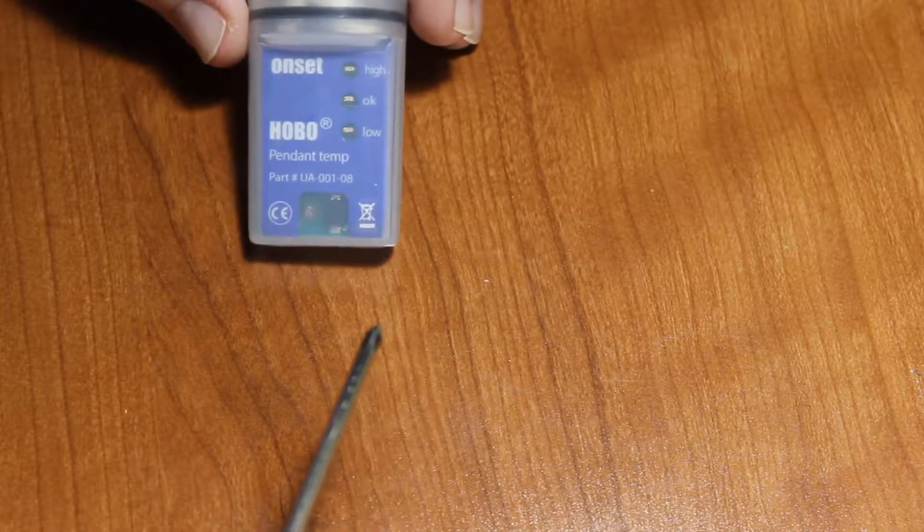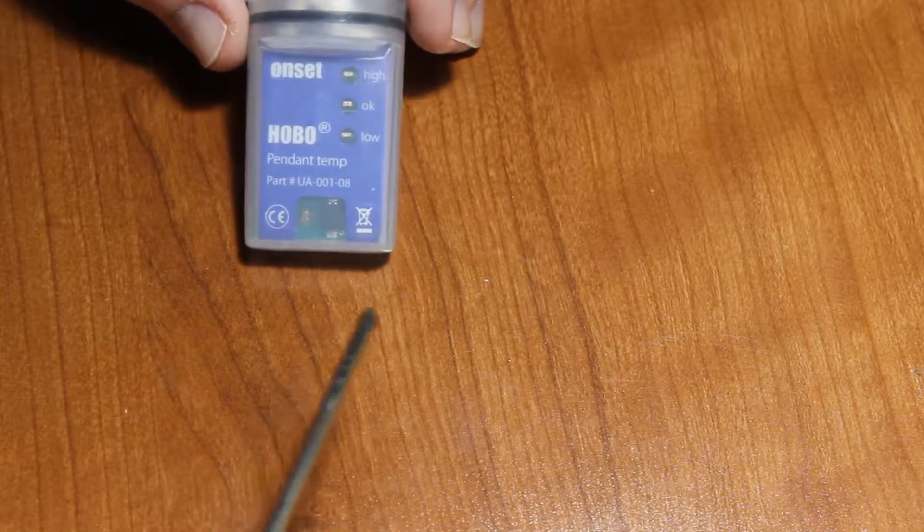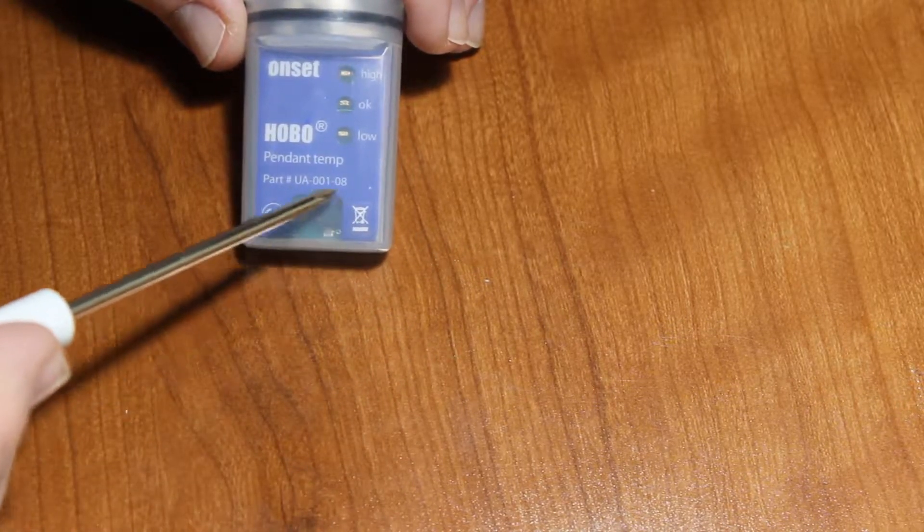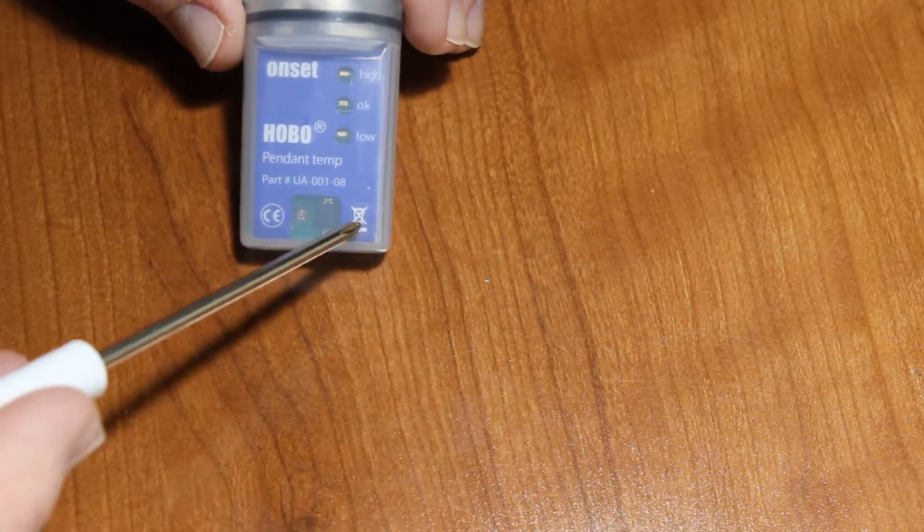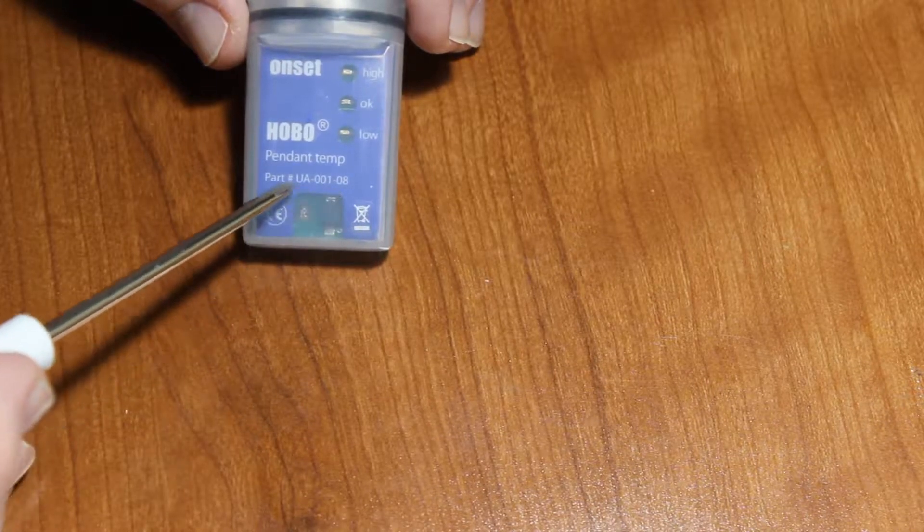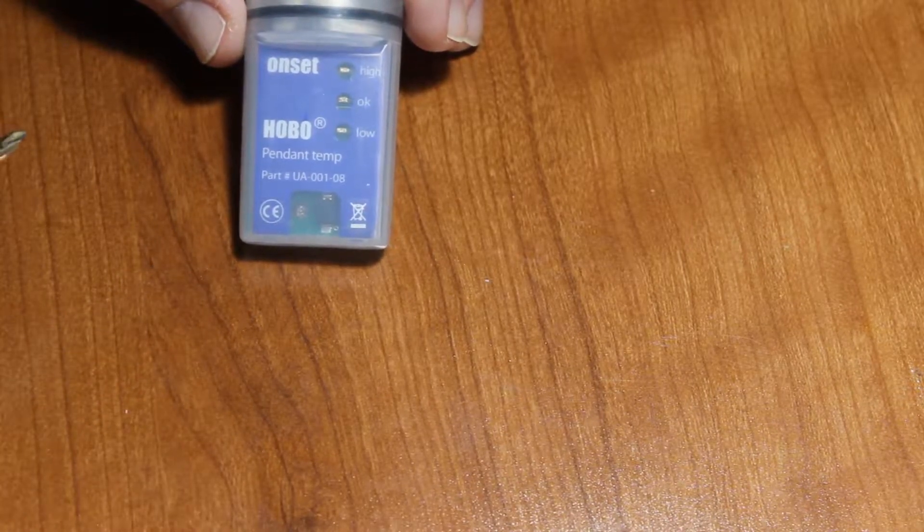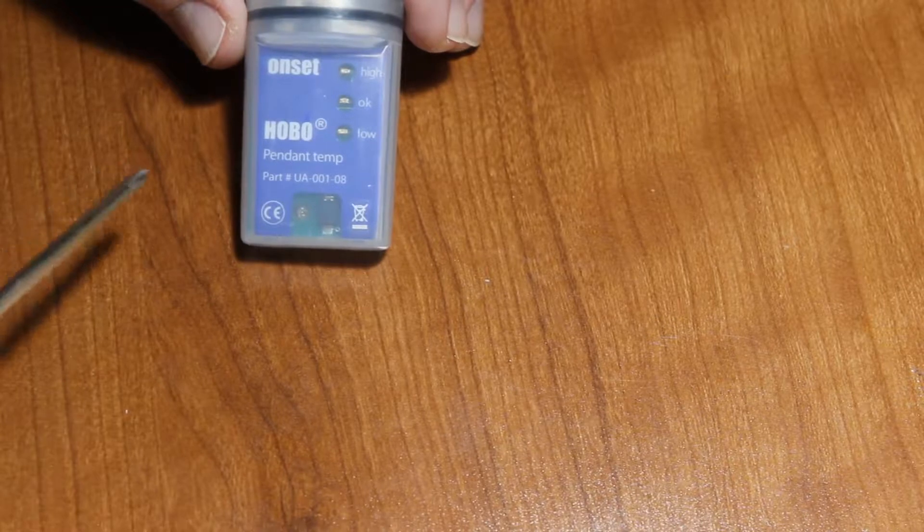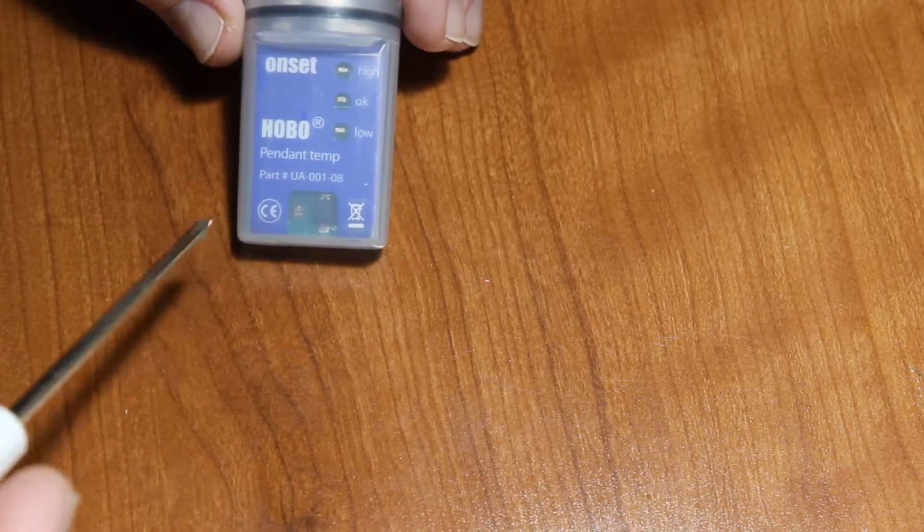A couple of things to look at before we disassemble it. This area right here between the CE mark and the wheelie bin, you can see there's a little window cut out of this label. This blue part is an internal label. We'll show you how that comes out.